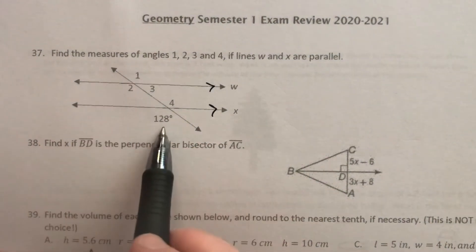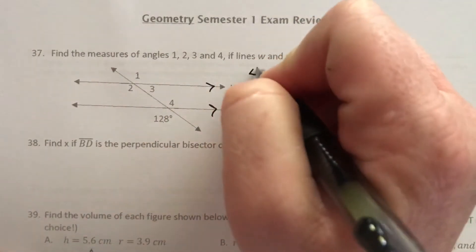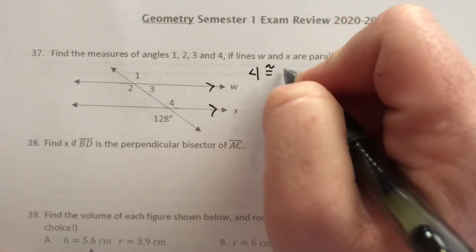So these are parallel. We gotta find the measures of the angles. For angle 1, its relationship with this angle is that they are alternate exterior.